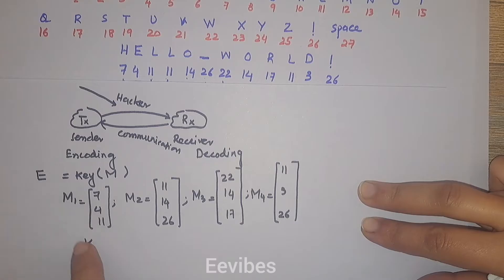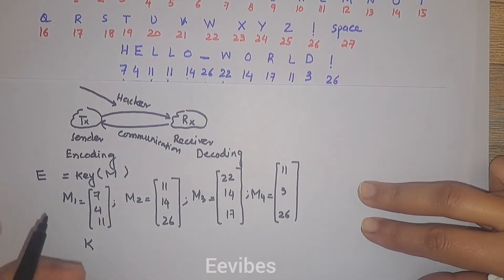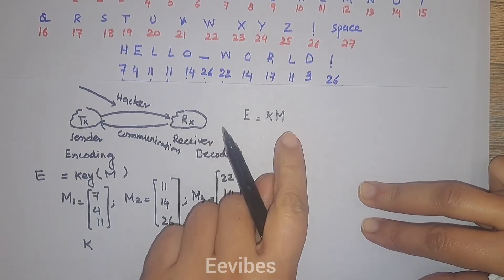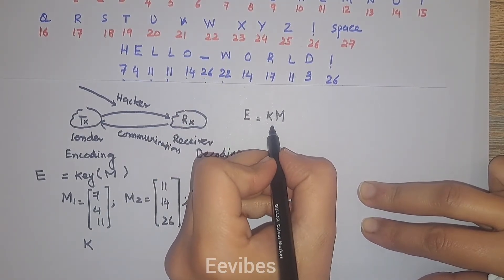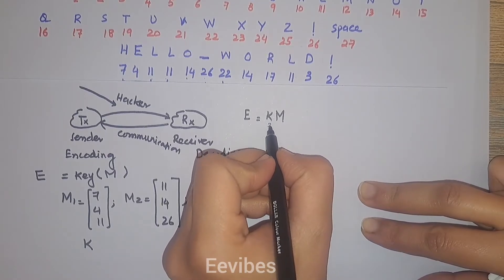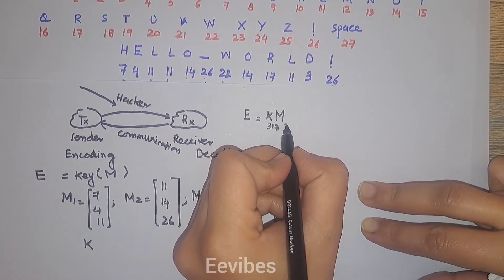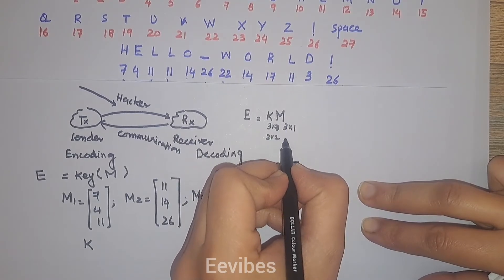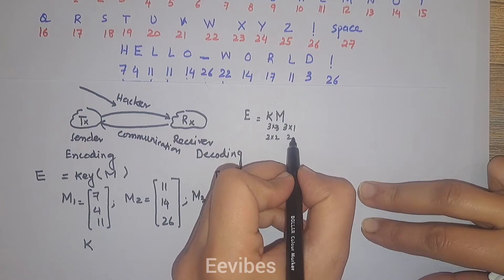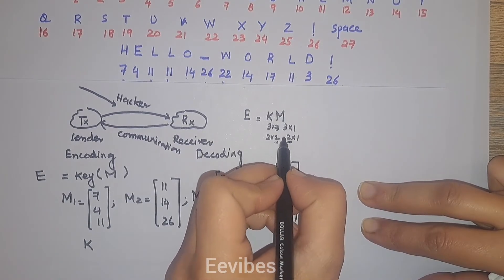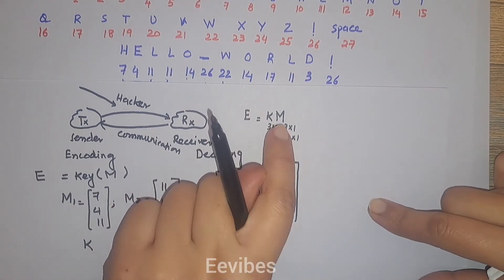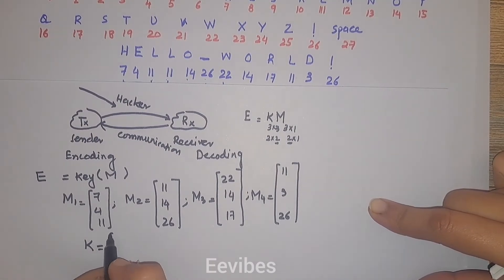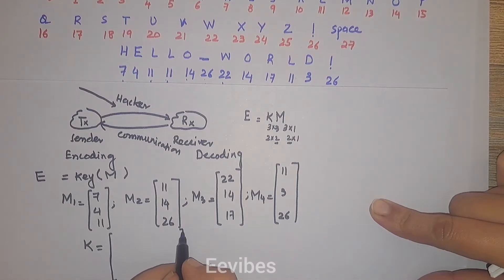Assuming the encryption algorithm is e = k × m, we have to satisfy the order of matrix multiplication. If the key k is of order 3×3, then m must be of order 3×1. If the key is 2×2, the message vector must be 2×1. To satisfy the multiplication rule when using matrix multiplication for encoding, the dimensions must match. The key is chosen randomly, but once selected, it is used throughout for the entire encryption.